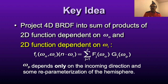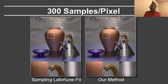Furthermore, we showed that you need to re-parameterize, so that omega depends only on the incoming direction and some re-parameterization of the hemisphere. For most microfacet BRDFs, this would depend on the half angle, for example. Once you've done that, we could produce results like this with 300 samples per pixel. Our method is on the right, and I've shown some close-ups, and compared to the then state-of-the-art method — sampling the LaFortune fit — we obtained substantially better results.